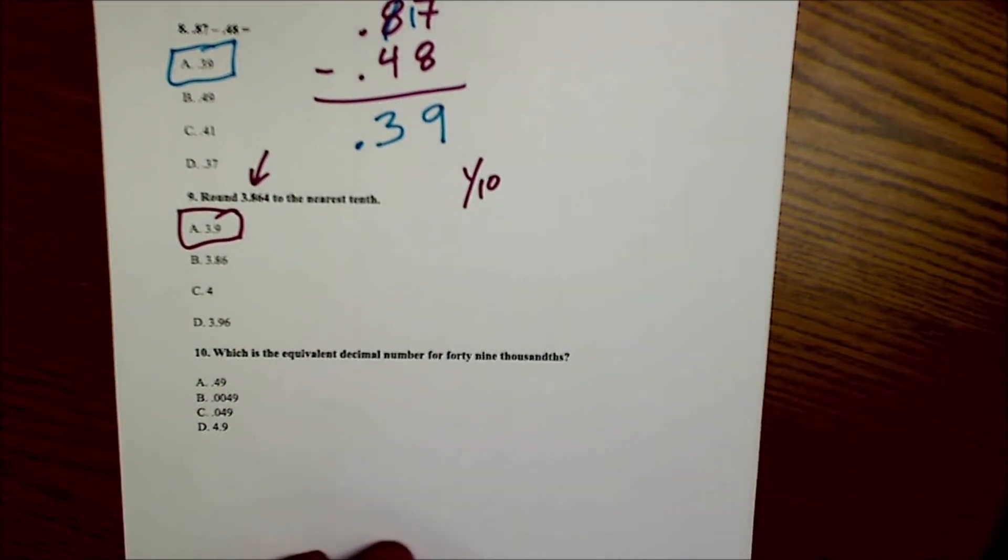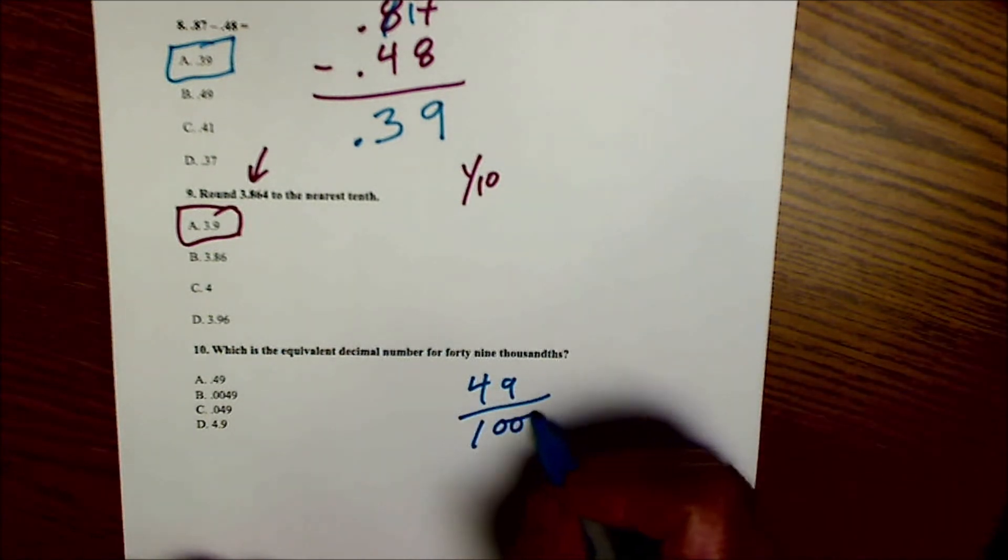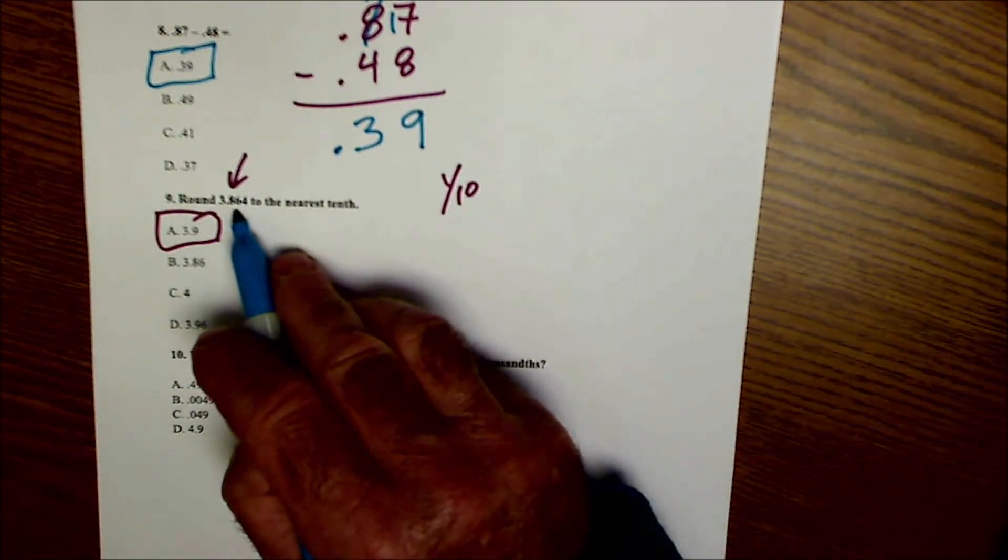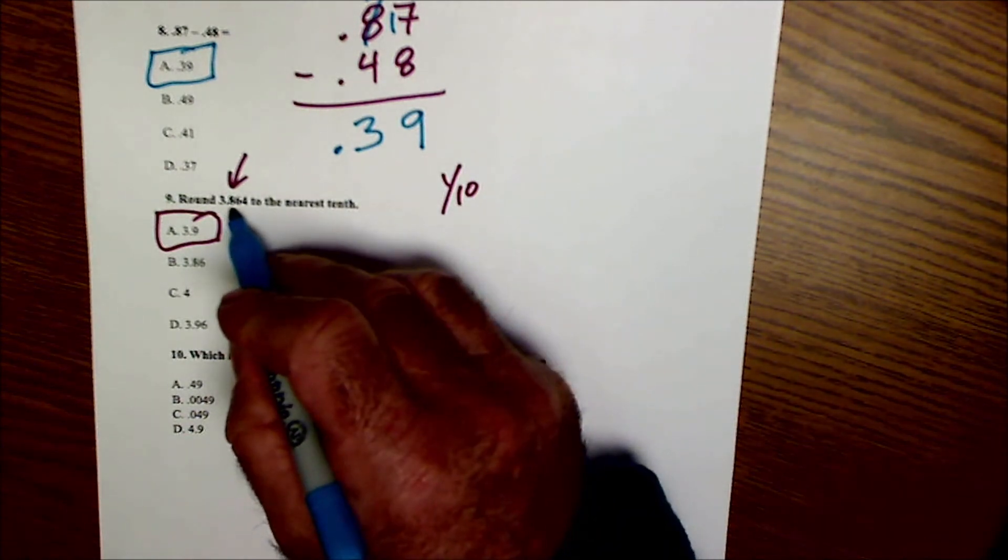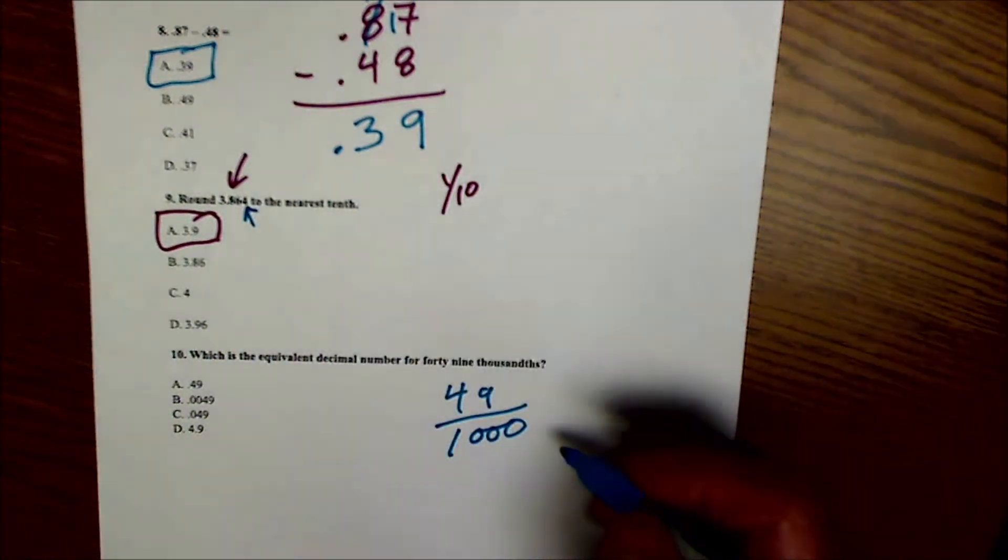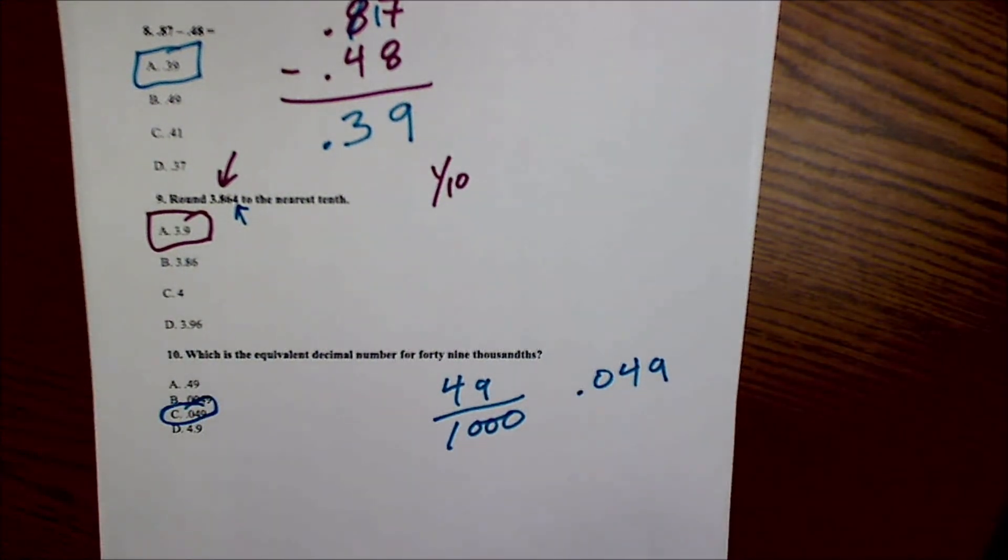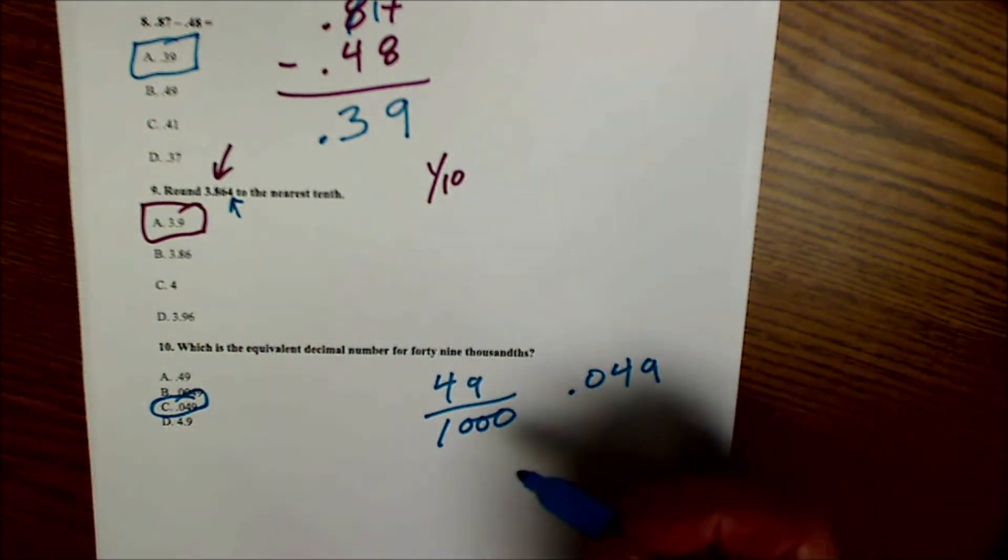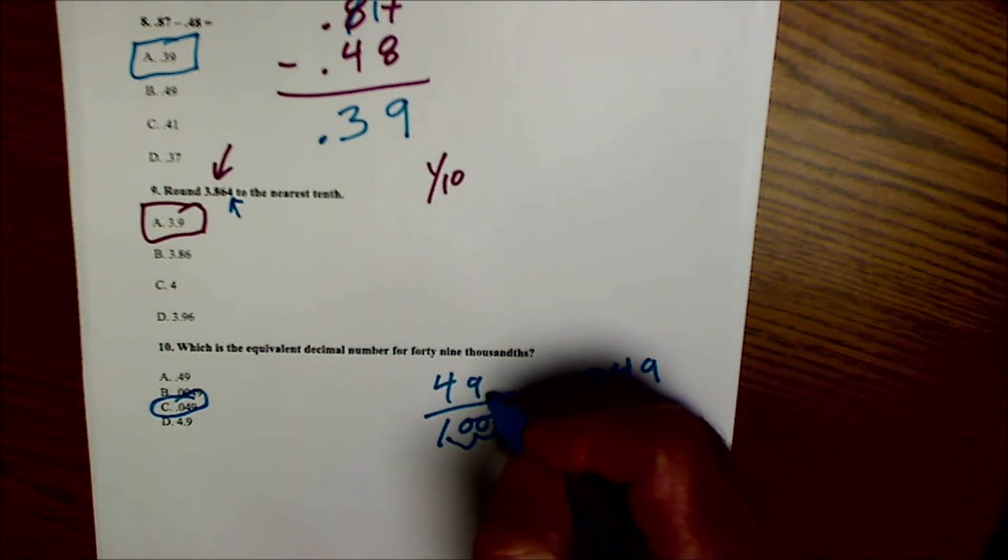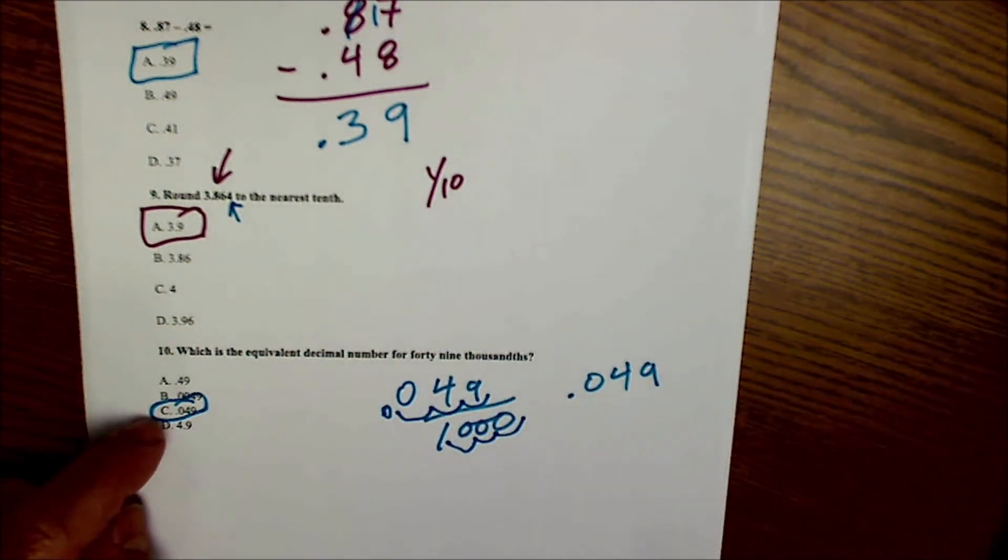Lastly, number 10, which is the equivalent decimal number to 49 thousandths. 49 thousandths, so 49 thousandths again would be this is my 1s, my 10ths, my thousandths. I'm sorry, this is my 1 tenth, 100, 1 thousandths place, so we're in that place and that would be a 49. So this would be .049. So .049 is answer C right there. You could do long division here but you could see here that if I go over 1, 2, 3, that would give me a 1. I'd have to go over 1, 2, 3, .049. So 49 thousandths is .049.